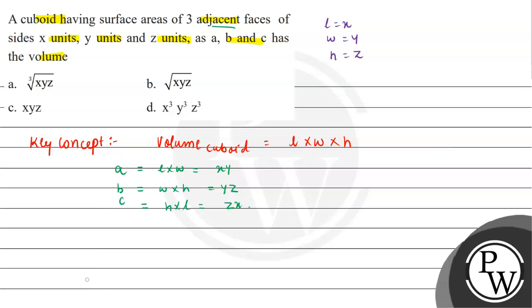Now, let's explain the relation between A, B, C and volume of cuboid. So volume of cuboid, as we have discussed, is length multiplied by width multiplied by height. So this is X multiplied by Y multiplied by Z.